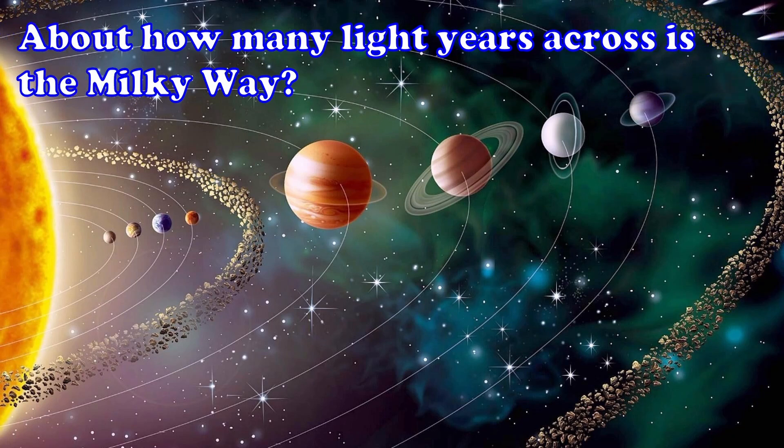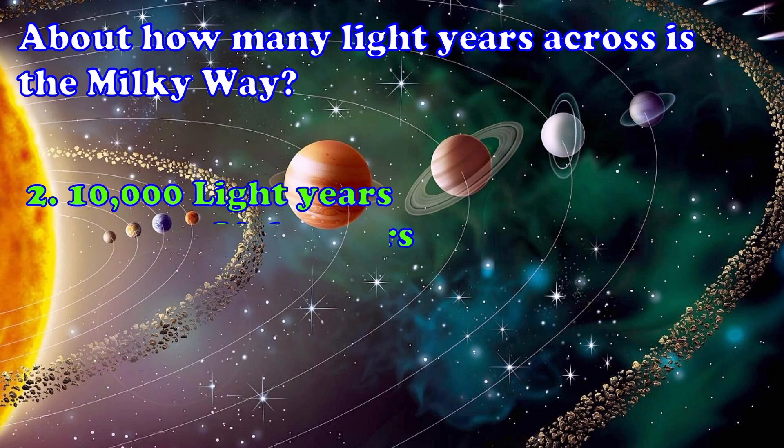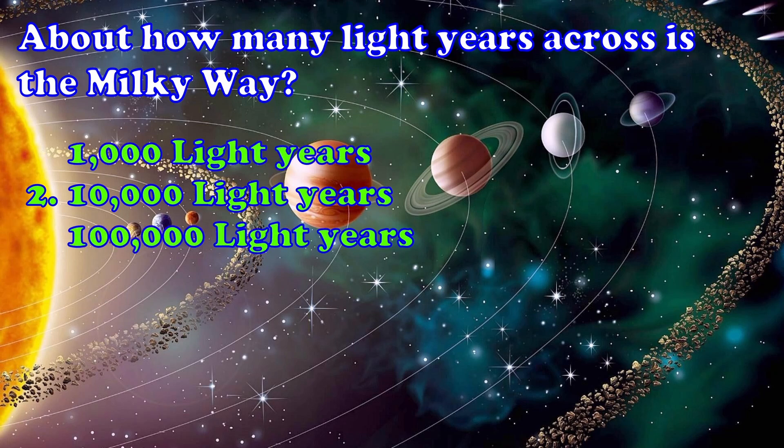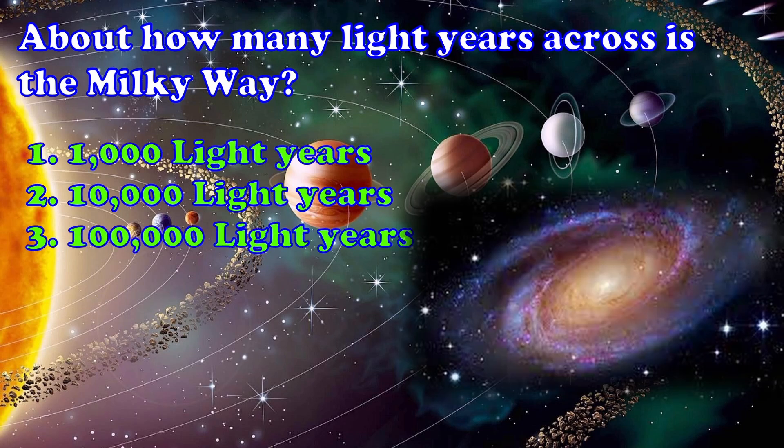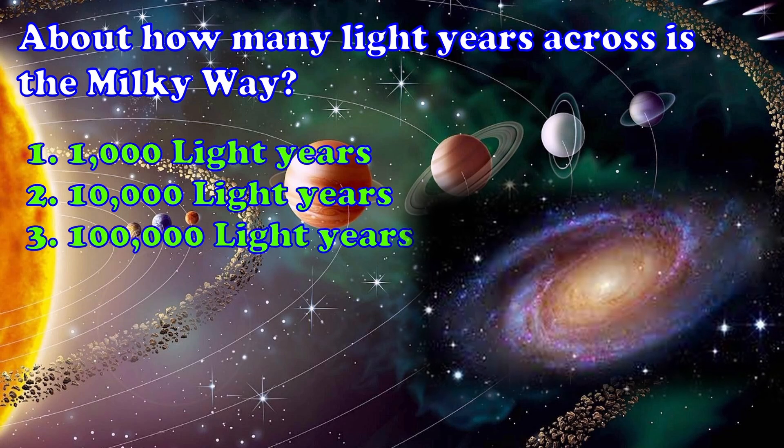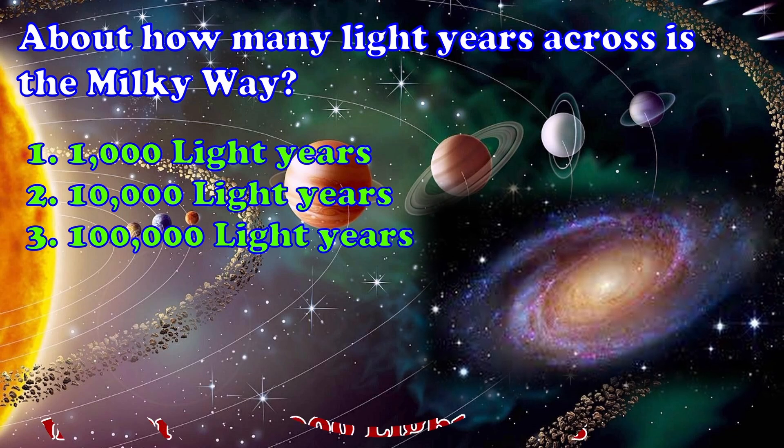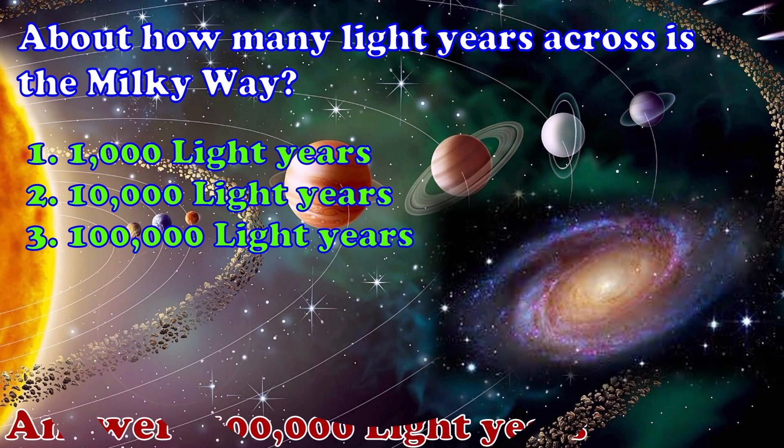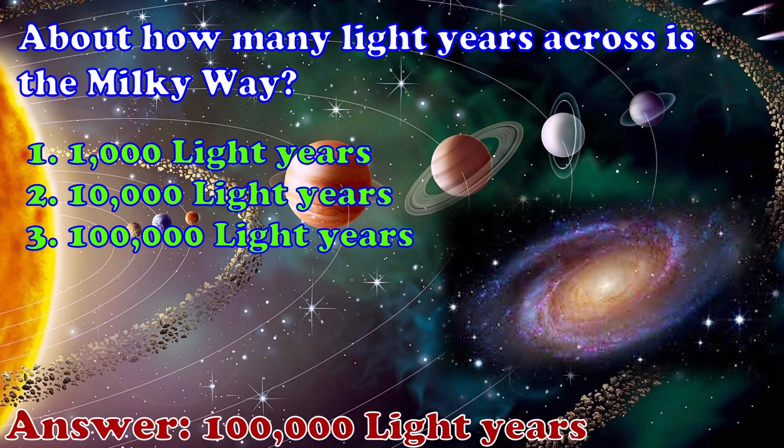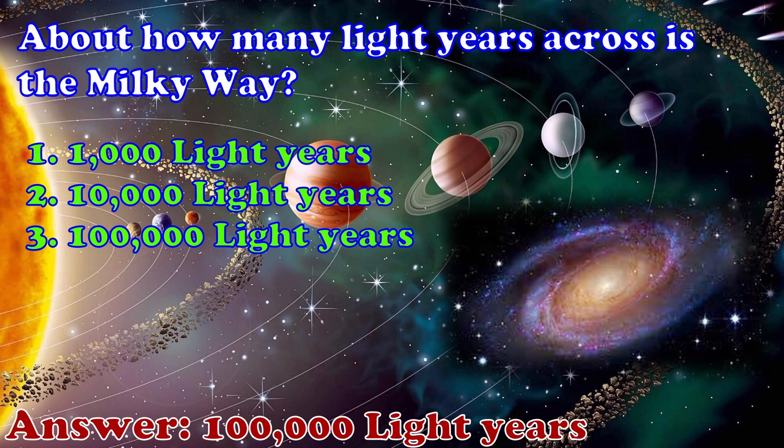About how many light years across is the Milky Way? 1. 1000 light years 2. 10,000 light years 3. 100,000 light years. The answer is 100,000 light years.